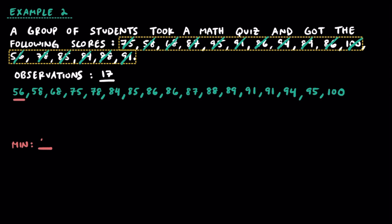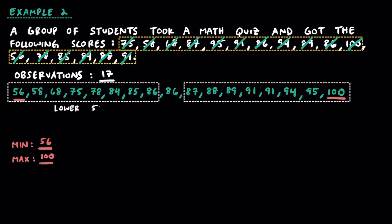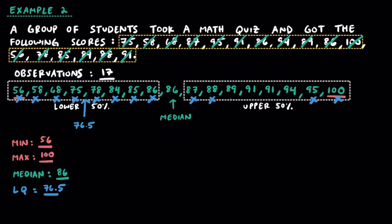The minimum score here is 56, and the maximum score is 100. Because we have 17 observations, we're going to have 8 on the lower half and 8 on the upper half, leaving 86 in the middle. This separates our data into the lower 50% and upper 50%, and 86 will be our median. Finding the middle of the lower half, we go between 75 and 78, giving us 76.5 — this represents the lower quartile, or quartile 1. For the upper 50%, the middle is going to be 91, since 91 is between 91 and 91. Therefore, the upper quartile, or quartile 3, is equal to 91.